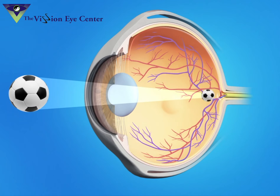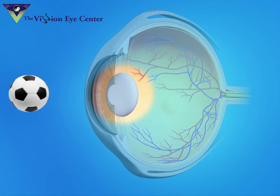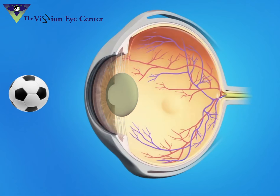As the cataract forms, the lens gradually becomes cloudy. As the light passes through this cloudy lens, it cannot focus the image clearly on the retina, and objects look hazy or blurred.